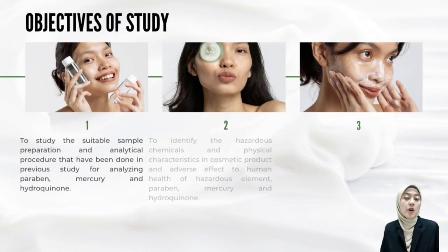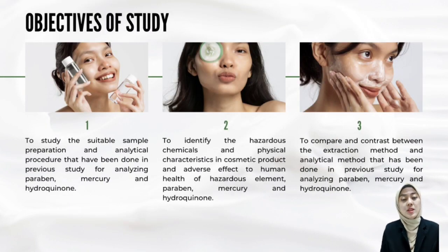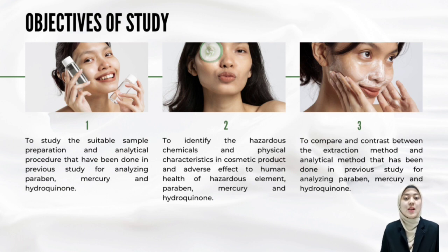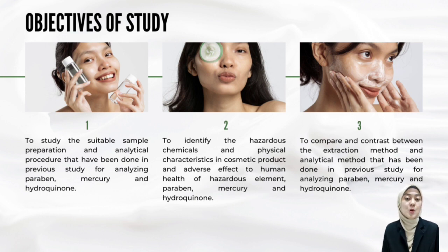The objectives of this study are to study the suitable sample preparation and analytical procedures that have been done in previous studies for analysing paraben, mercury and hydroquinone; to identify the hazardous chemicals and physical characteristics in cosmetic products and their adverse effects on human health; and to compare and contrast the extraction methods and analytical methods used in previous studies for analysing paraben, mercury and hydroquinone.